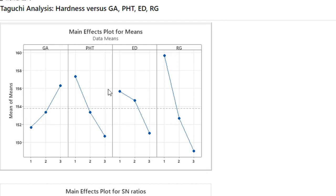So GA level 1, PHT level 3, ED level 3, and RG level 3.